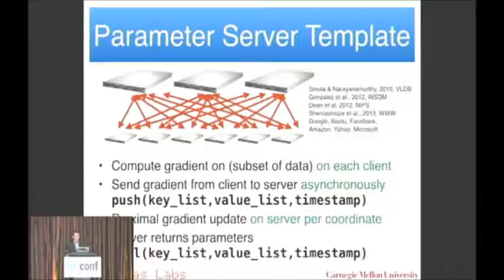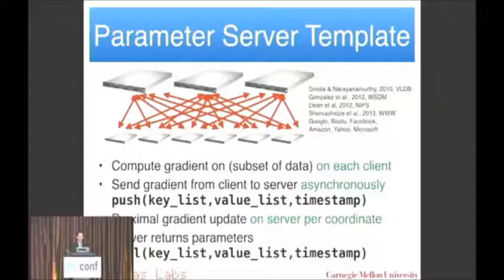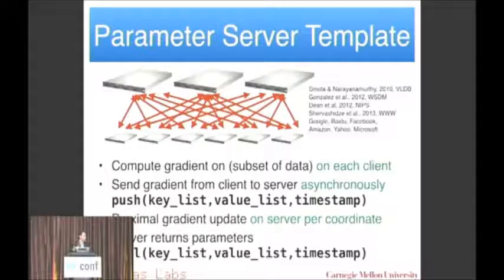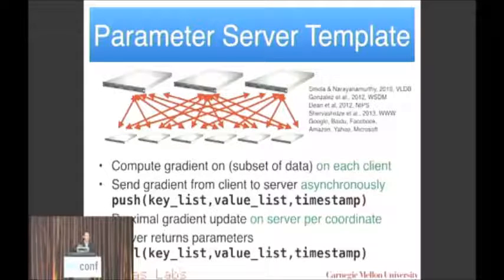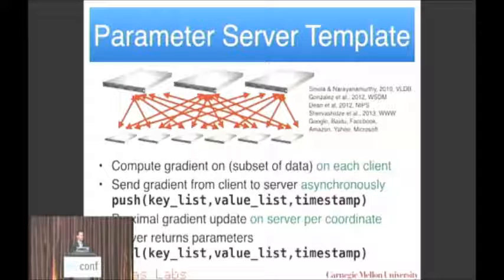Let's look at how this actually maps into a system. You compute a gradient on a subset of the data, then each client sends the gradient from client to server asynchronously — because different machines will be slow at different times, especially on cloud services. The server then updates its parameters, and then it pushes things back or the clients can pull. The semantics are very similar to a distributed key-value store, except that we've overloaded what push and pull means.